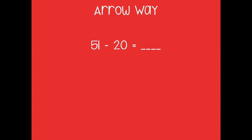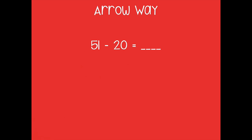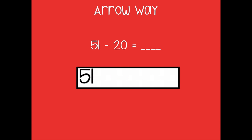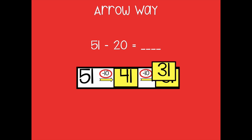Let's use the arrow way to subtract 51 minus 20. Pause the video, solve this problem, and then click play when you're ready to go over it together. Starting with 51, I break that 20 into groups of 10 and subtract: 51 minus 10 equals 41, minus 10 more equals 31. We can double-check — 10, 20 — so we did subtract 20. So 51 minus 20 equals 31.